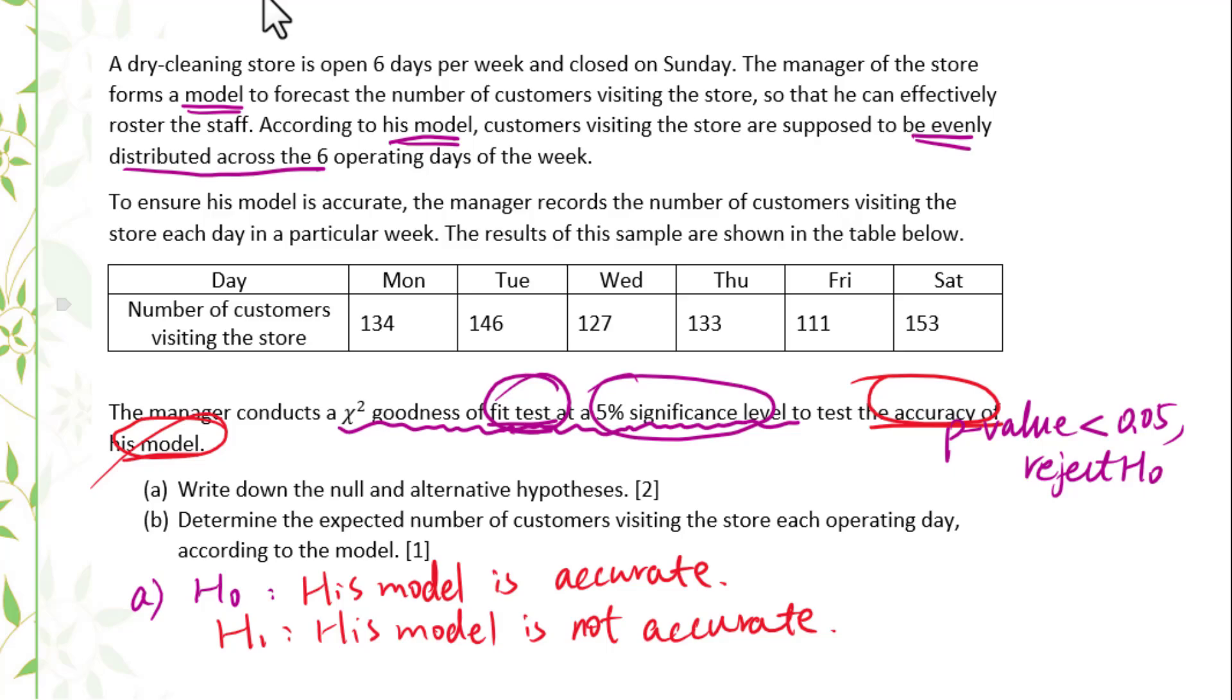According to his model, customers visiting the store are supposed to be evenly distributed. We need to add all this together, then divide it by 6. We can figure out how many people visiting the store each operating day. So for part b, we add all this number together.